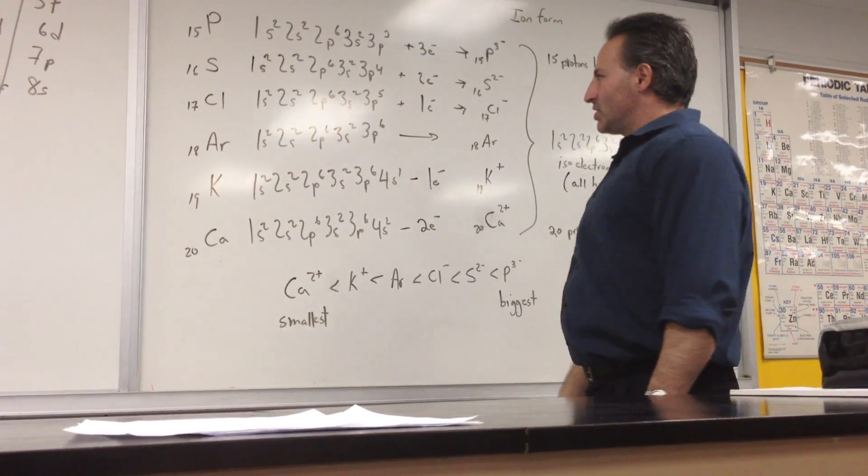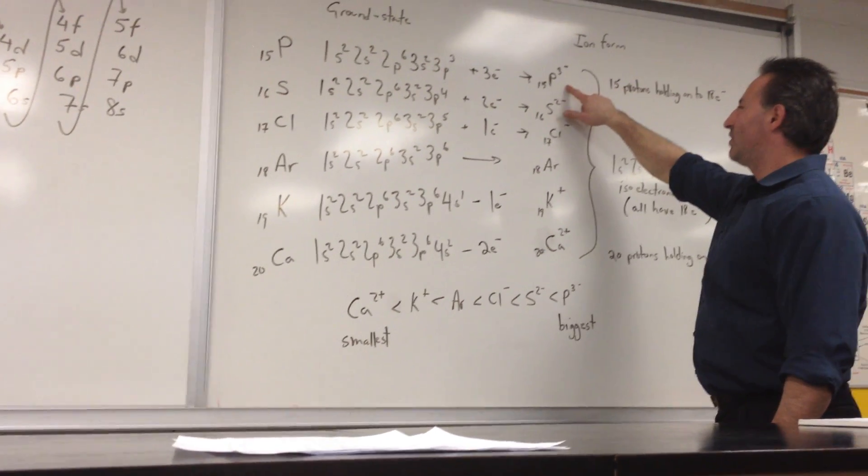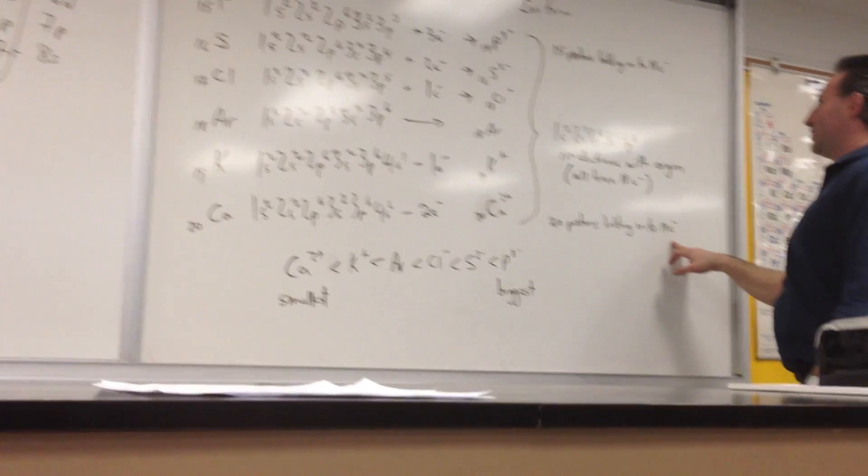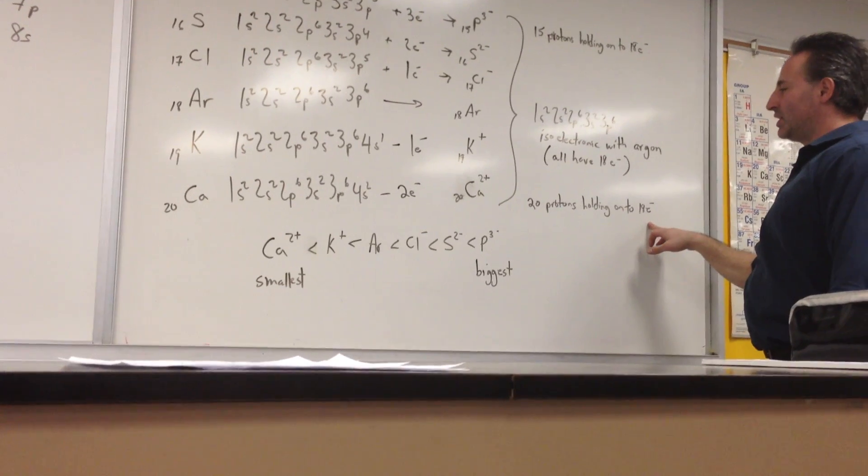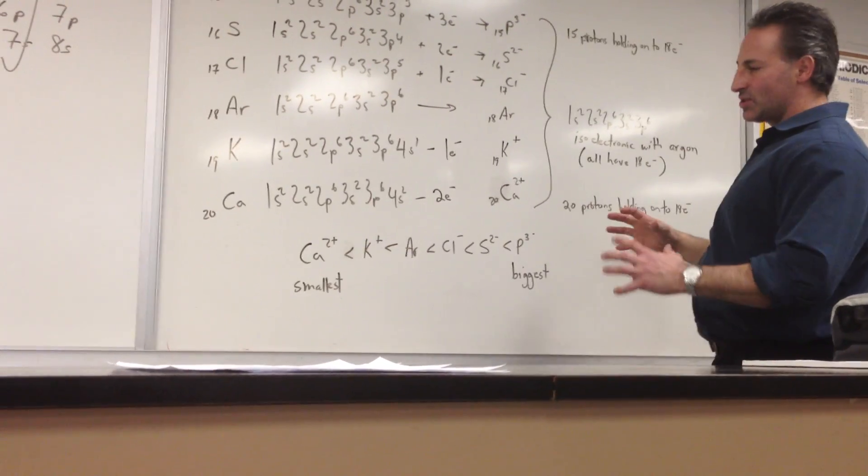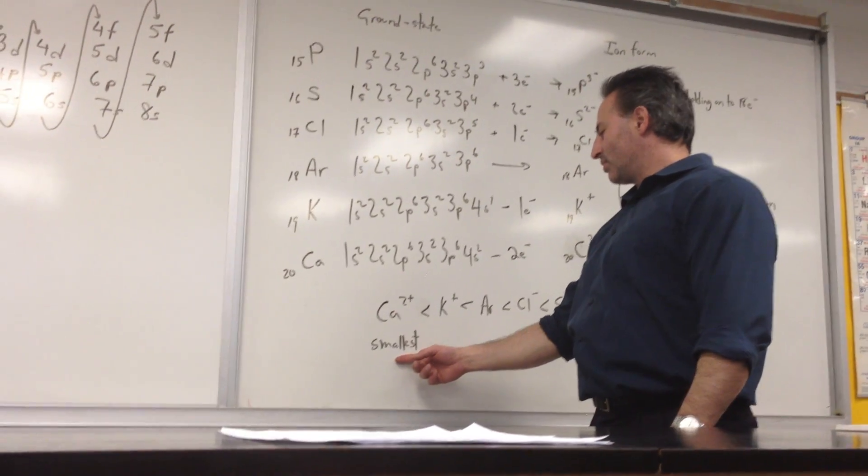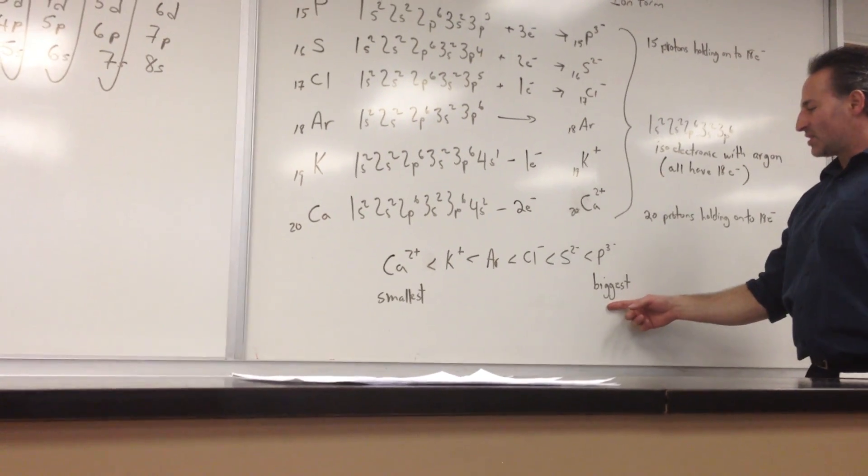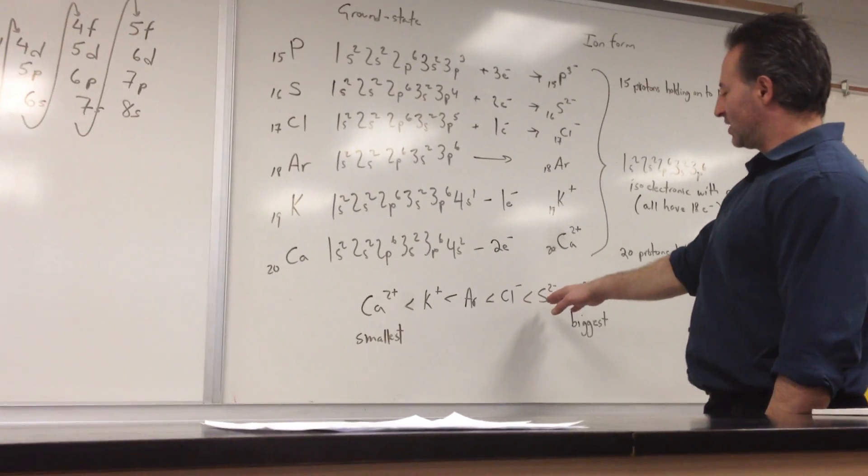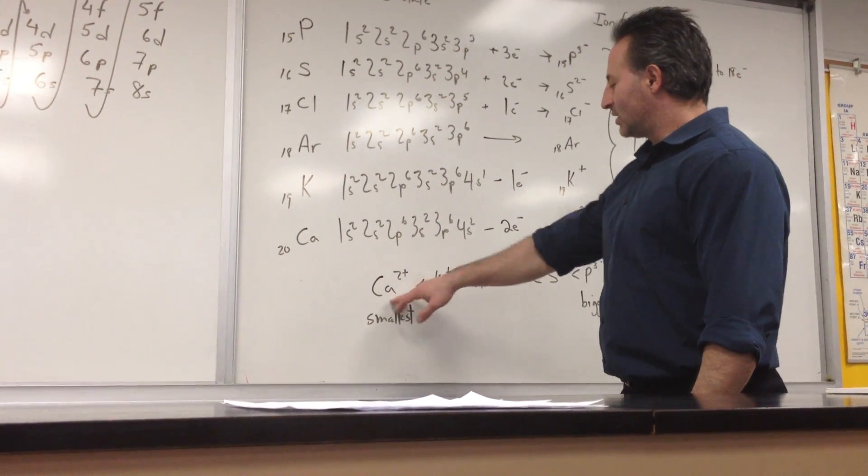And we can make some considerations regarding the size of these ions. First of all, we realize there are only 15 protons in the phosphorus anion holding on to 18 electrons, whereas there are 20 protons in calcium holding on to the same 18 electrons. So we can predict that this has a higher nuclear charge, therefore those 18 electrons are going to be held more snugly. Therefore, it's safe to assume that the calcium cation is the smallest of those, whereas the largest is the phosphide anion. They range in size according to the nuclear charge. Phosphorus is the biggest, sulfide is next, chloride is the next largest, argon is in the middle, and then potassium is even smaller than argon, calcium is smaller still.